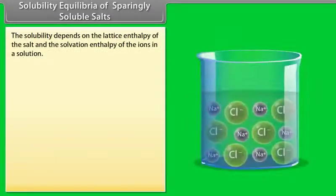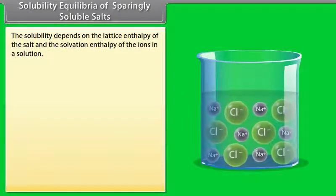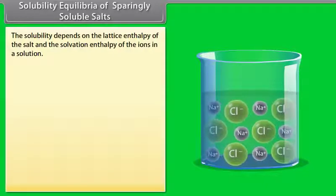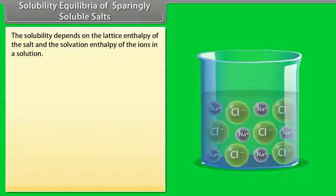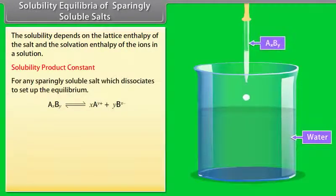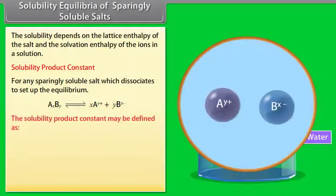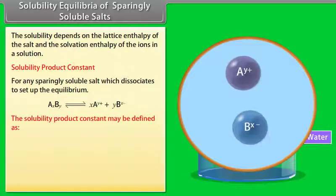Solubility equilibria of sparingly soluble salts: The solubility depends on the lattice enthalpy of the salt and the solvation enthalpy of the ions in solution. The solubility product constant may be defined for any sparingly soluble salt that dissociates to set up an equilibrium.